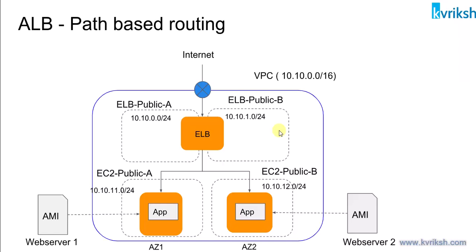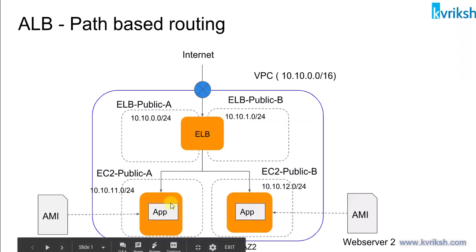AWS Application Load Balancer works at Layer 7 and supports this feature, allowing you to manage routing to different backend EC2 instances. For this exercise, we'll set up a network with a VPC and internet gateway. Since the elastic load balancer is internet-facing, we need two public subnets to launch it across two availability zones, and then backend EC2 instances as web servers in different AZs.